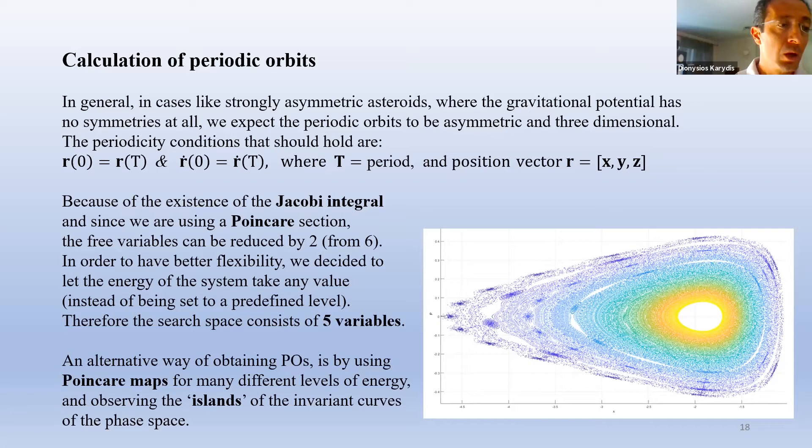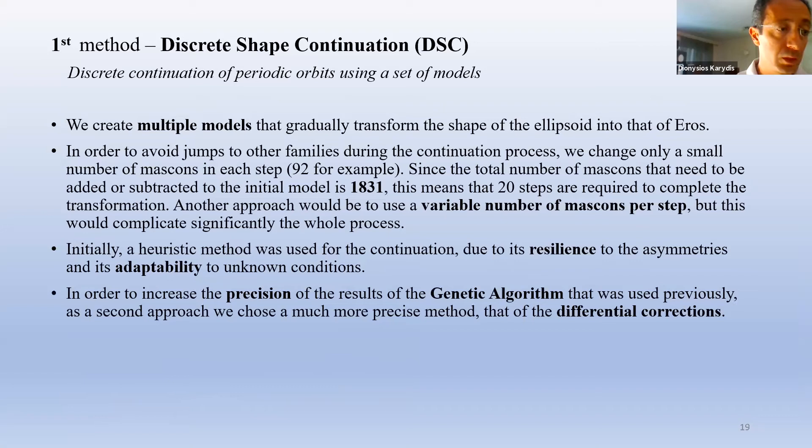The first method of shape continuation of periodic orbits uses a set of intermediate models. This means that we create multiple models that gradually transform the shape of the ellipsoid into that of Eros. In order to avoid jumps to other families during the continuation process, we change only a small number of mass cons in each step. Initially, genetic algorithm was used for the continuation due to its resilience to the asymmetries and its adaptability to unknown conditions. Nevertheless, in order to increase the precision of the results, we chose a more precise method, that of the differential corrections. The addition and subtraction of the necessary mass cons was done in a sequential way. This operation is done from the front side of the asteroid backwards.